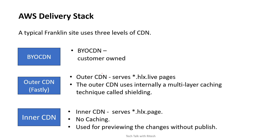The second level of CDN is the outer CDN. We will have caching here. It sits in between, but we call it the outer CDN because BYOCDN is optional. The outer CDN serves the live pages — we can correlate these with the publish pages in AEM terminology. The outer CDN uses internally a multi-layer caching technique called shielding.